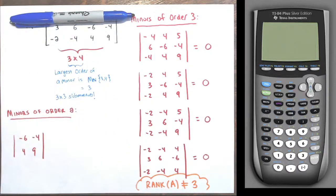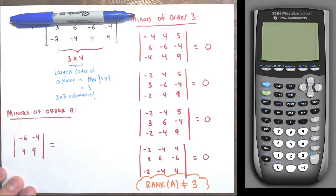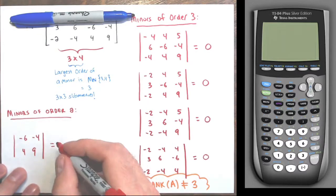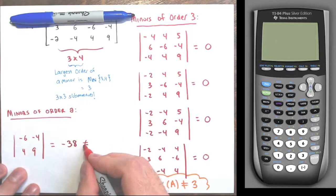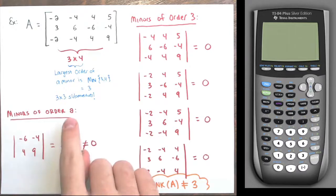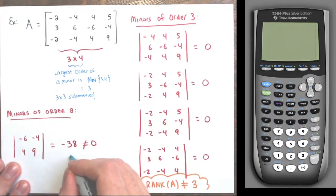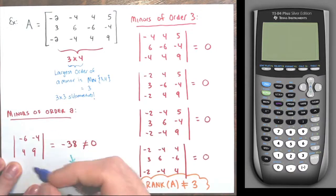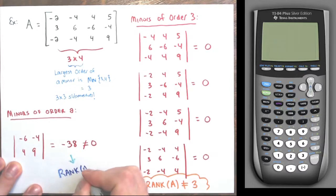Here's a minor of order two: negative six, negative four and four, nine. The determinant is negative 54 minus negative 16, which is negative 54 plus 16 equals negative 38. That is not zero. I can stop. I have found my non-zero minor of order two. You can find all sorts of other ones by removing any one row and any pair of columns, but we don't need to keep going. The largest order that has a non-zero minor is order two, so the rank of this matrix is two.